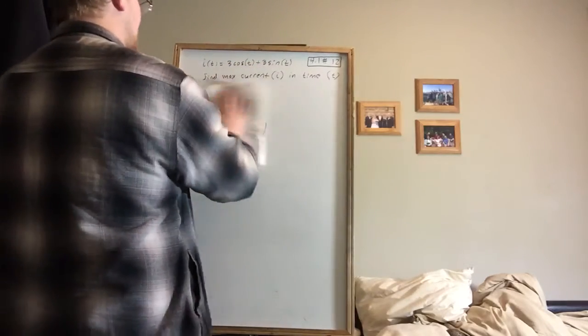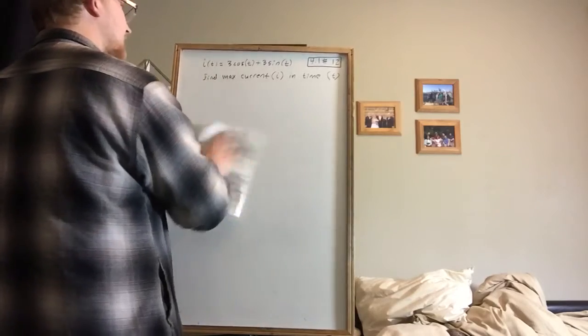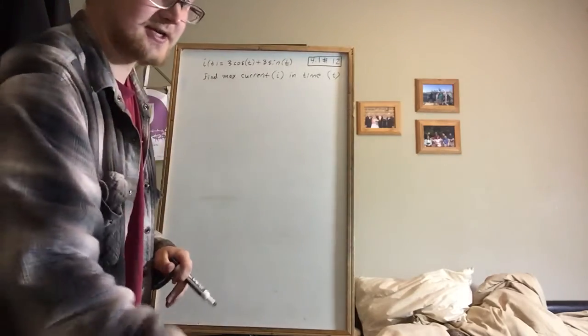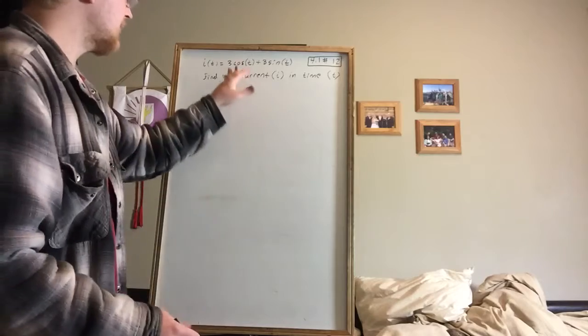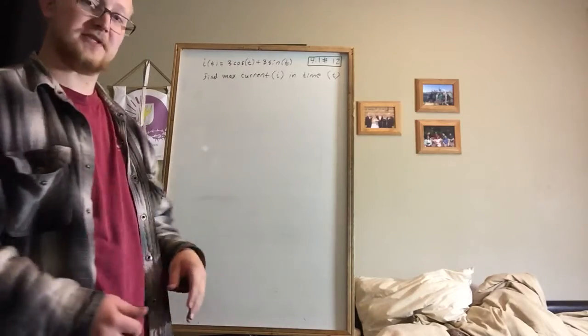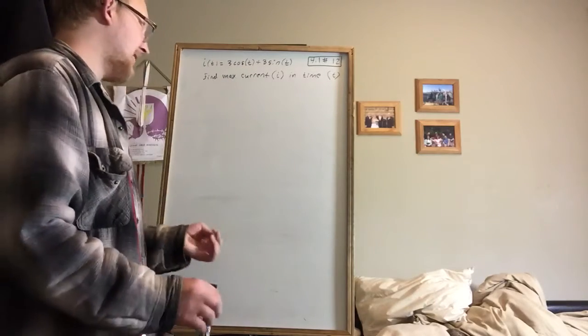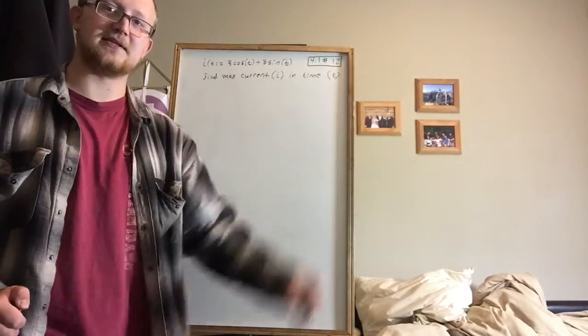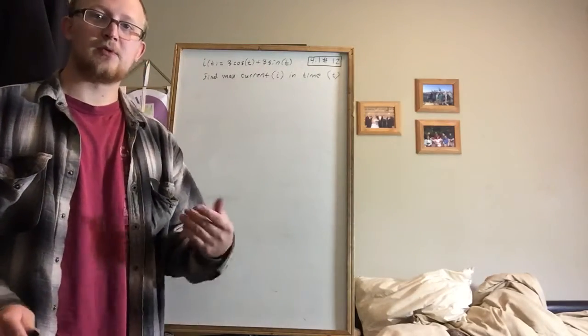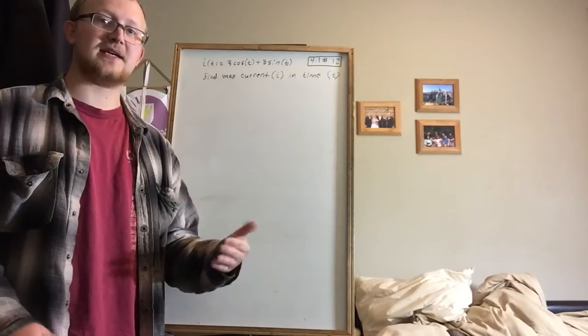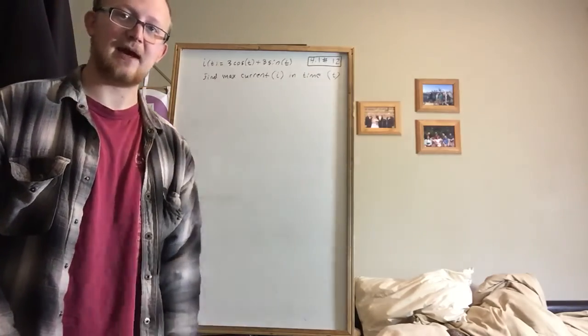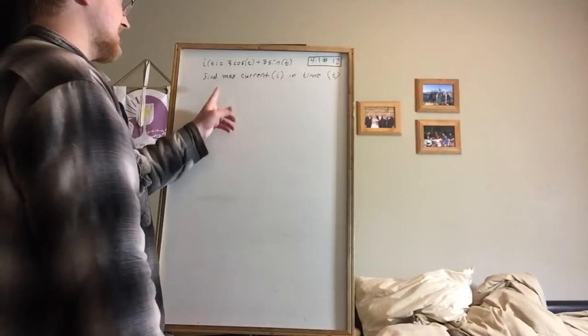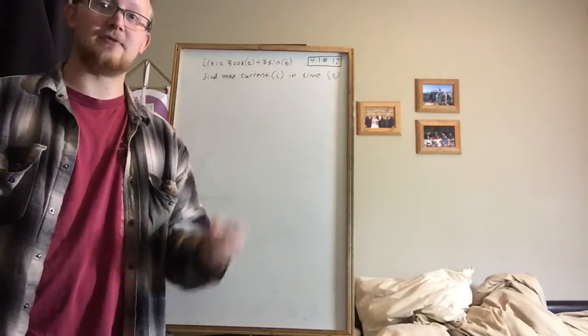Now the question here is, find the maximum current i in the entire time t. And whenever we see sines and cosines or trig functions, we have to remember that the max is going to happen over and over again, because it's cyclic. So we're not necessarily just looking for one maximum, there's going to be infinitely many maximums.